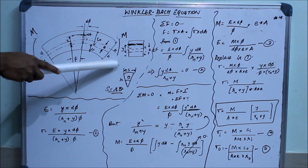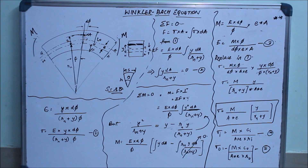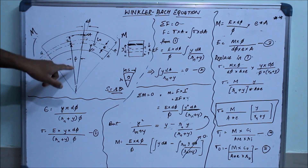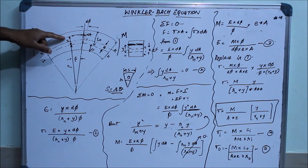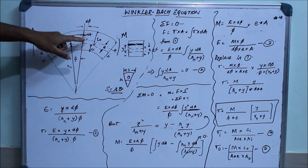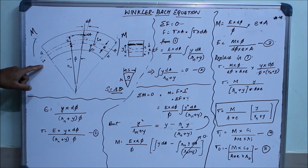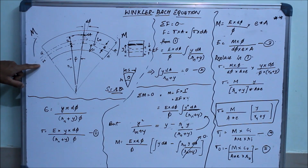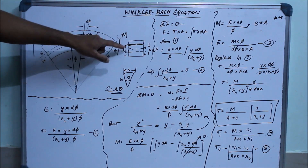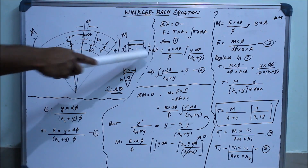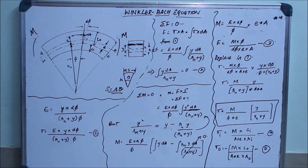We use the arc length equation s = r·θ, which we learned in high school. This arc subtends an angle delta phi, and the element subtends an angle phi. Here, rn is the radius of the neutral axis, y is measured from the neutral axis, and e is the radial distance between the geometrical axis and the neutral axis — the eccentricity. I have explained this in my previous video.